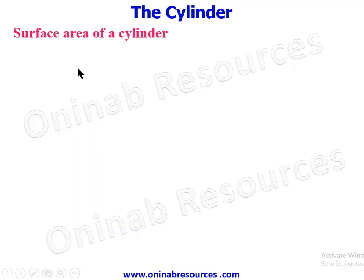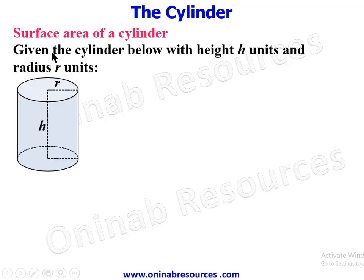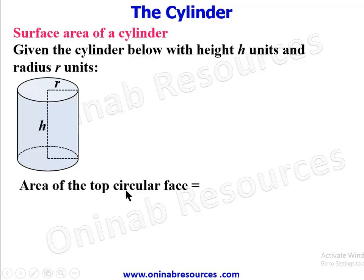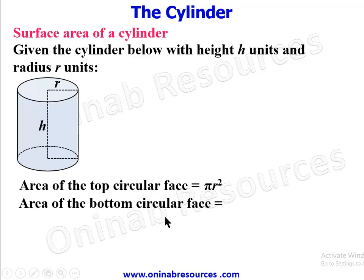For the surface area of a cylinder with height h units and radius r units: the area of the top circular face, which is a circle, is πr², and the area of the bottom circular face is also πr².